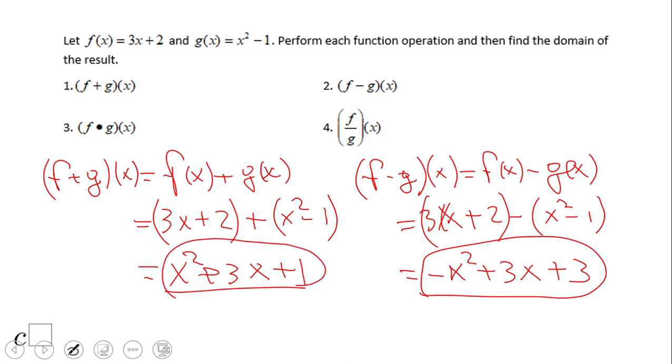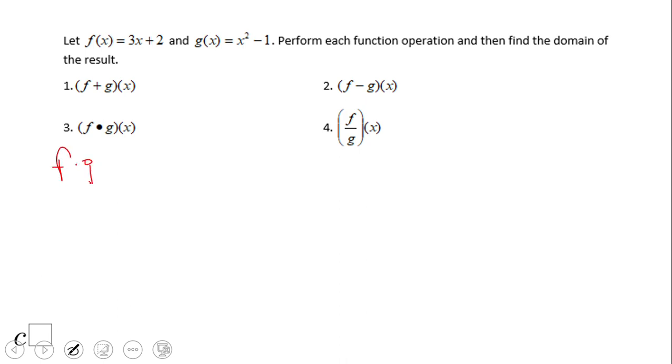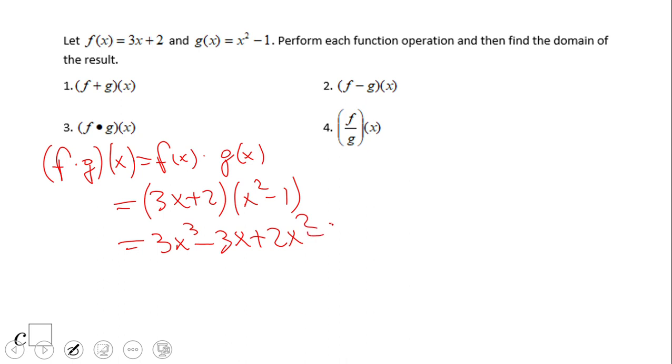What about f times g? f times g of x is f of x times g of x. Here we have 3x plus 2 times x squared minus 1. We can use the FOIL method or the generic rectangle. We're going to use the FOIL method. We're going to have 3x cubed minus 3x plus 2x squared minus 2. The final form in standard form is 3x cubed plus 2x squared minus 3x minus 2.